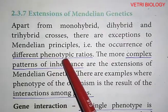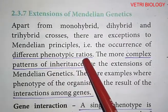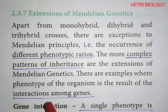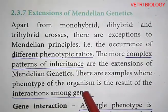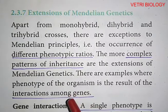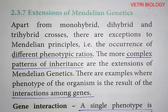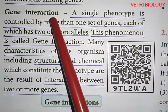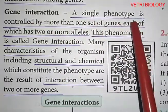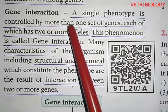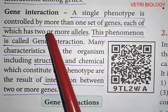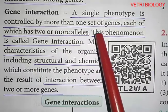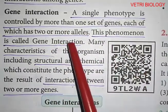These different phenotypic ratios are formed due to the interactions among genes. Let us see what gene interaction is. Gene interaction: a single phenotype is controlled by more than one set of genes, each of which has two or more alleles.